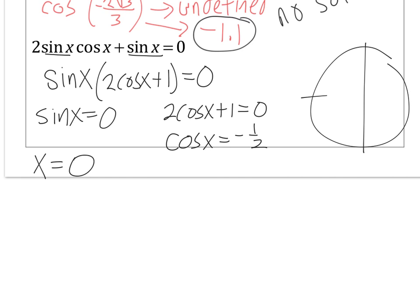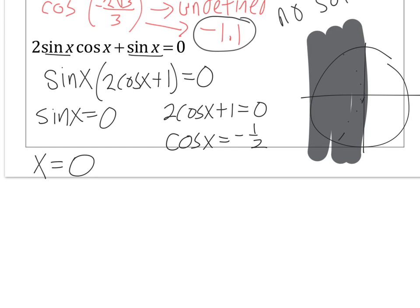Those are going to be our pi over 3 angles. And we're looking at the ones in the left side of our graph. So that would be 2 pi over 3 and 4 pi over 3. Those are the 2 angles that have X coordinates of negative 1 half.